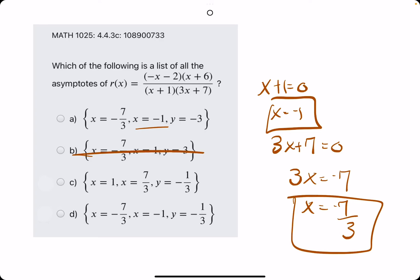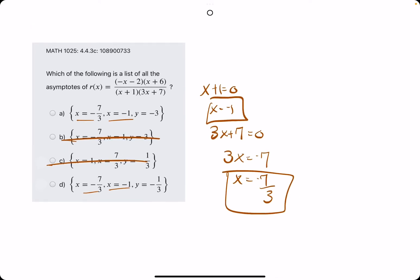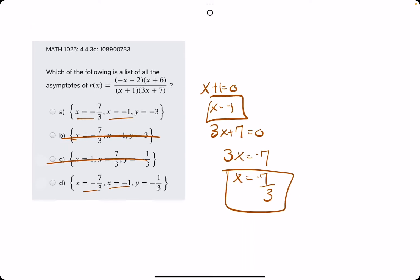So negative one and negative seven-thirds. So in this case, pretty cool. There's actually two options that have both negative one and negative seven-thirds. So we actually need to find the horizontal asymptote.